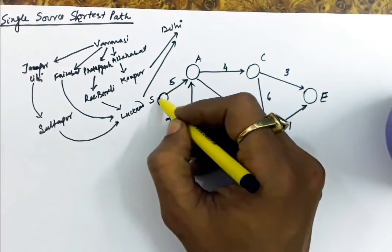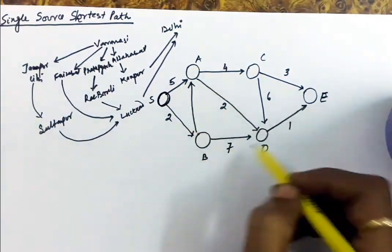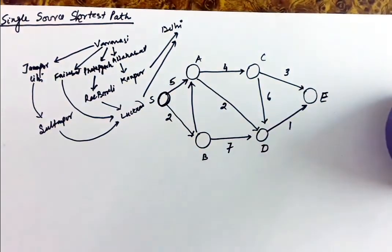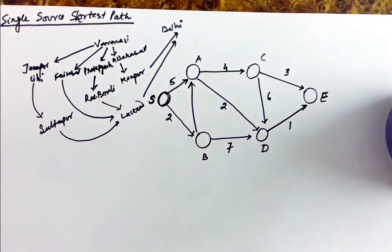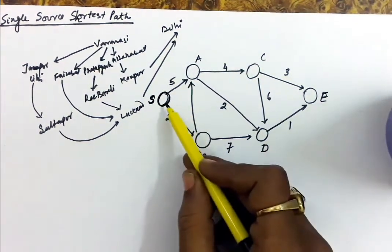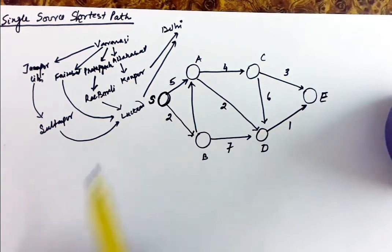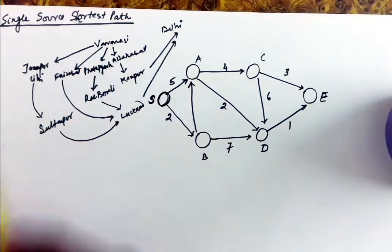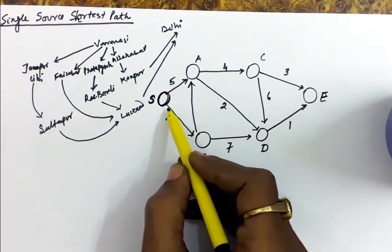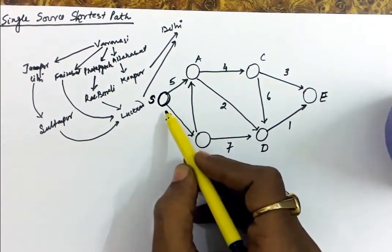If we consider this as a graph, with these various stations as vertices, let us say ABS Engineering College is the source vertex S, and we have to find out the distance of vertices A, B, C, D, and E from the source S. The method we can apply here is the single source shortest path, because the source is defined here.